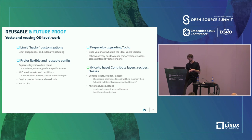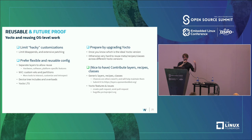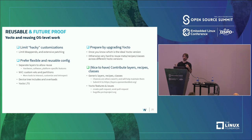Use an LTS version of Yocto, and prepare by upgrading Yocto if you're moving to a new device. It's very hard to maintain meta layers that work across different versions of Yocto. If your goal is to reuse the same recipes and metas, one way is to upgrade current products to the target Yocto version first — it's going to be much easier to reuse from there, even if it's not easy to do.